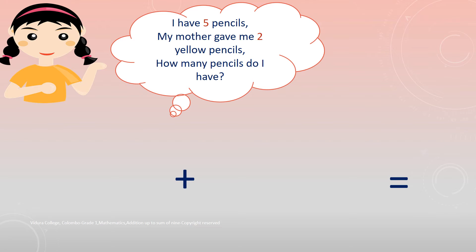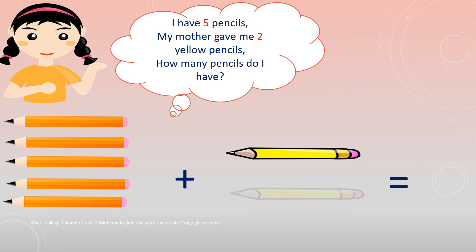Look at this picture children. I have 5 pencils. And, my mother gave me another 2 yellow pencils. Now, I am going to check how many pencils that I have all. Let's add them together. 1, 2, 3, 4, 5, 6, 7. Now, I have 7 pencils.